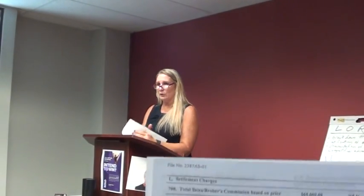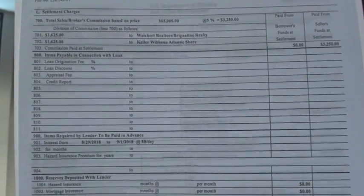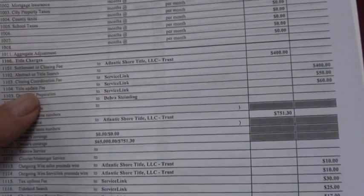Those are the bottom lines of what the buyer needs to bring and what the seller is getting back. Flipping to the second page, the left-hand column is the buyers. On this cash transaction there are no lender's charges, but if it was a commercial deal there would be charges in the 800 through 1,000 column — that's where all the lender's charges would be. We start in the title charges at line 1101, which is the settlement fee. On this transaction, the seller was a bank, and banks will not pay the settlement fee, so the buyer pays the whole thing.